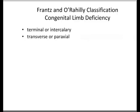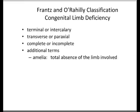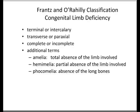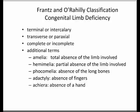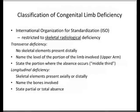There is a Frantz and O'Rahilly classification of limb deficiency, which defines deficiencies as terminal or intercalary, transverse or paraxial, and complete or incomplete. There are multiple terms used: amelia means total absence of the limb; hemimelia means partial absence; phocomelia means absence of the long bones; adactyly means absence of the fingers; achyria is absence of a hand; and apodia is absence of a foot. The main classification for congenital limb deficiency is from the ISO — International Organization for Standardization — which is restricted purely to skeletal radiological deficiency.